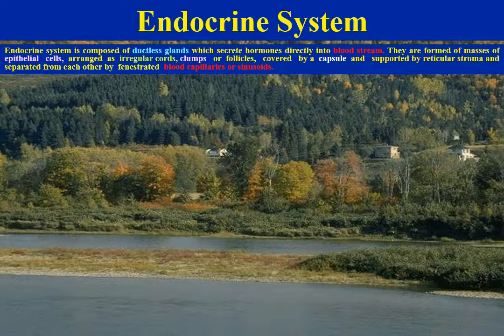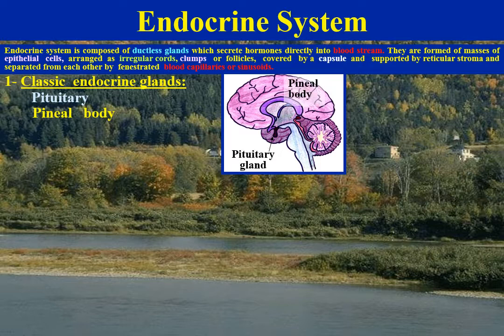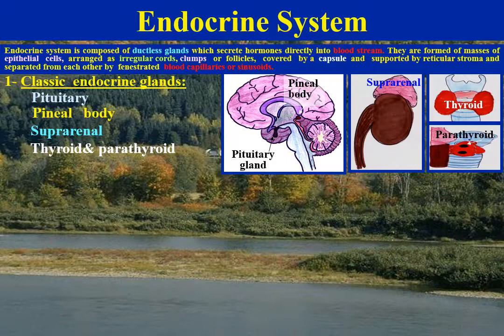The endocrine system is composed of ductless glands which secrete hormones directly into the bloodstream and are formed of masses of epithelial cells arranged as irregular cores, clumps or follicles covered by a capsule and supported by reticular stroma, separated from each other by fenestrated blood capillaries or sinusoids, as in the pituitary gland, pineal body, suprarenal gland, thyroid and parathyroid glands.